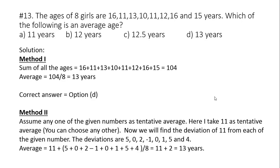Question number 13. The ages of 8 girls are 16, 11, 13, 10, 11, 12, 16, and 15 years. Which of the following is an average age? There are two methods of solving the question. Method 1.